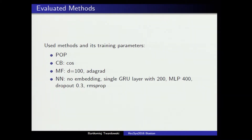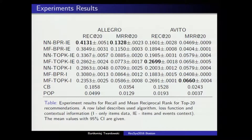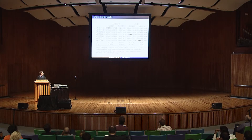I compared models for popularity, content-based with cosine similarity, matrix factorization, and the neural network approach. Here we see summary results for recall and mean reciprocal rank for the top-12 position. Each row is described by the algorithm, loss function, and contextual information. For example, 'I' means only events associated with an item; 'IE' also includes search events. We can see that for richer session information like the Allegro dataset, neural network approaches outperform the others.